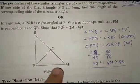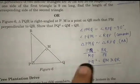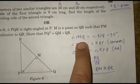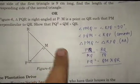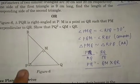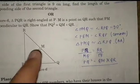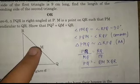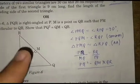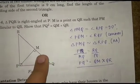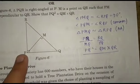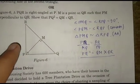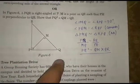Angle PMQ = angle RPQ = 90 degrees, and angle PQM = angle PQR, which is common. Therefore, triangle PMQ is similar to triangle RPQ. Using the ratios, we get PQ² = QM × QR.